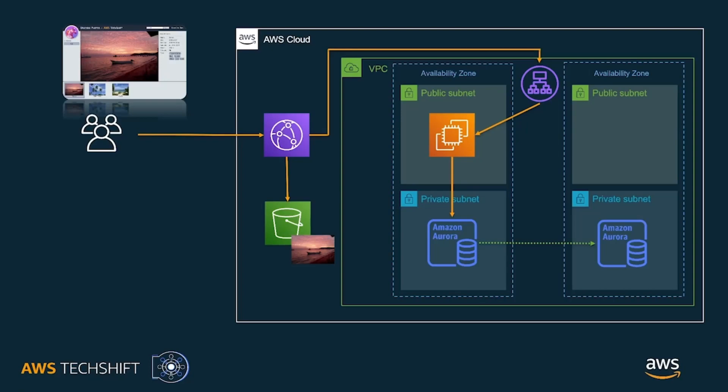If an instance becomes unhealthy, it will be taken out of service and the load balancer won't route traffic to it. Now that we have the load balancer in place, we can create more instances running the same application software behind it.